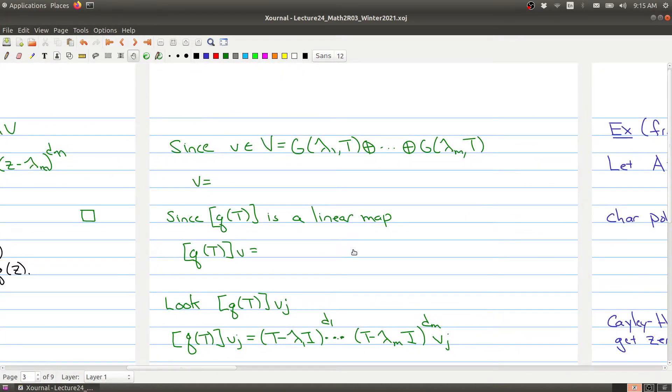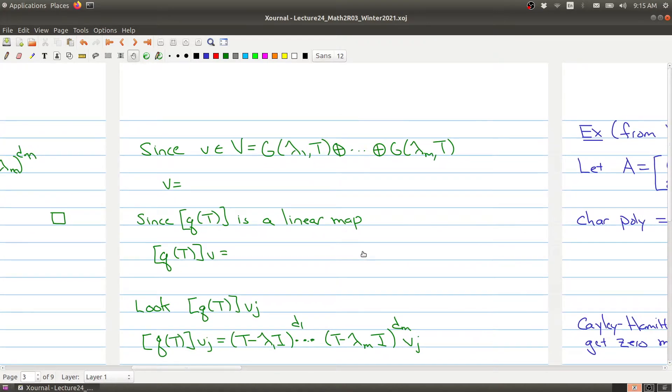Let's take advantage of the fact that we can write v as a direct sum of its generalized eigenspaces. Any vector can be written as v₁ + v₂ + ... + vₘ with each vᵢ in a corresponding generalized eigenspace.